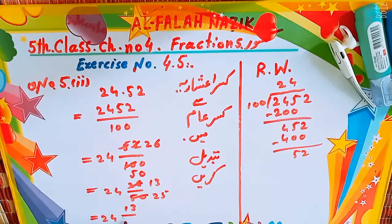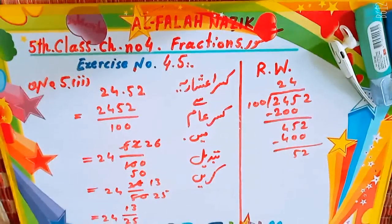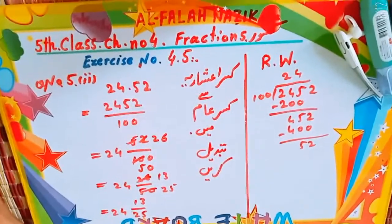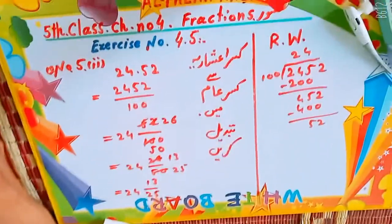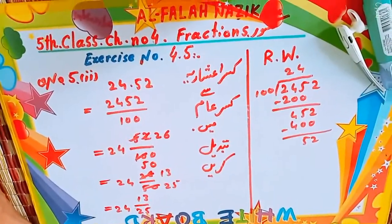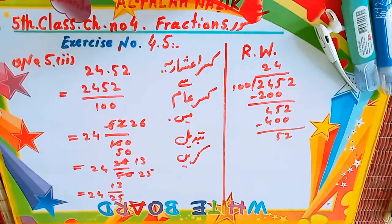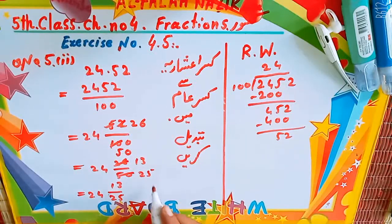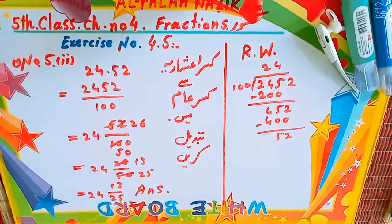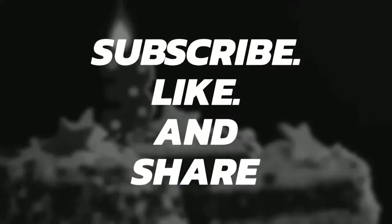تیرہ بٹا پچیس — اس طرح سے اس کا آنسر لکھے جائے گا۔ اس کا آنسر آئے گا چوبیس سہی تیرہ بٹا پچیس۔ تو یہ ہے اس کا آنسر۔ پسچن نمبر فائیو پوائنٹ نمبر ڈو آپ حل کر سکتے ہیں — تھینکس فور واچنگ، سبسکرائب کرنا نہ بھولیے گا۔ (Final answer: 24 and 13/25. Question number 5, point 2 is solved. Thanks for watching, please don't forget to subscribe.)